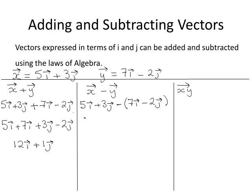So then you have 5i plus 3j, multiplying in by the negative then, minus 7i, minus by minus is a plus, 2j.